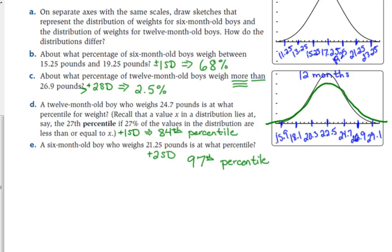A percentile means that if you're at the 27th percentile, 27% of your values are less than or equal to that number. So I'm going to briefly sketch my distribution for 12-month-old boys.